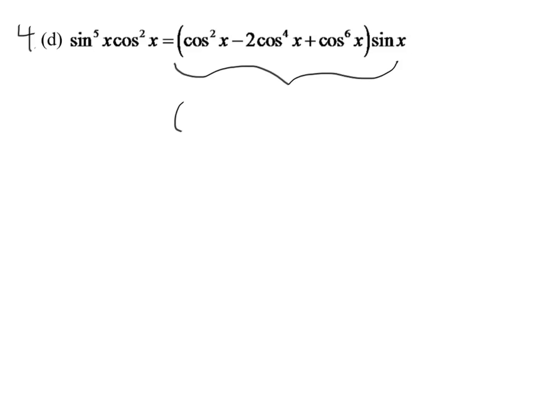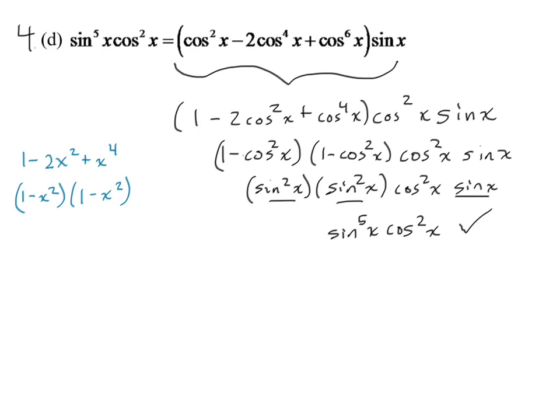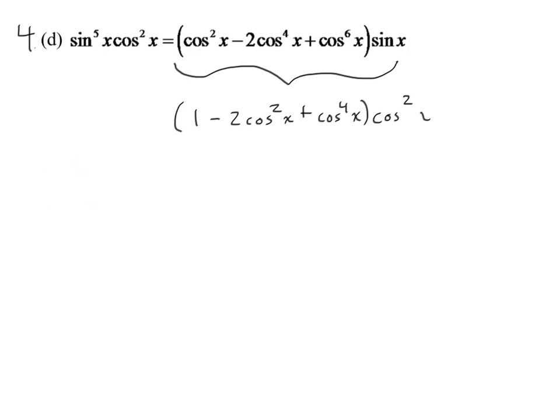So I'm going to first take out a cosine squared X from each of those terms. So that's from three terms. And when I take that out, I'm going to write it like that. Whoops. Sorry, guys. Didn't mean to show my whole plan at once. But I'll take out the cosine squared X, and so I have cosine squared X times sine X.